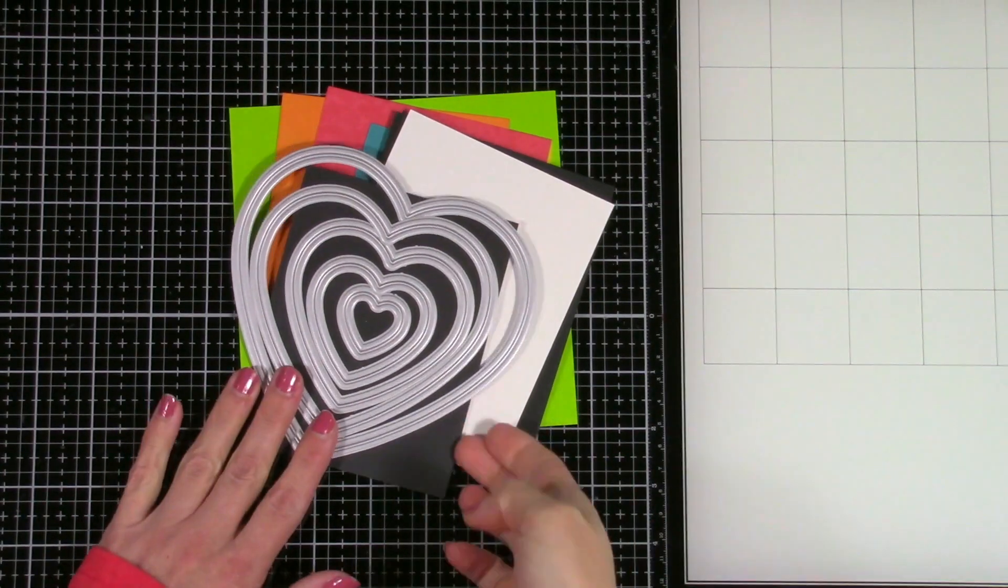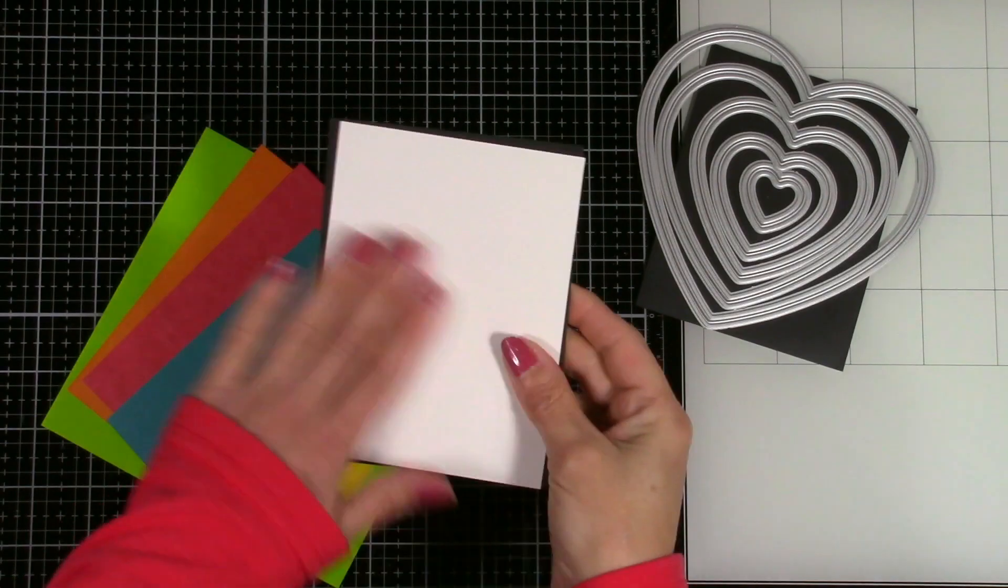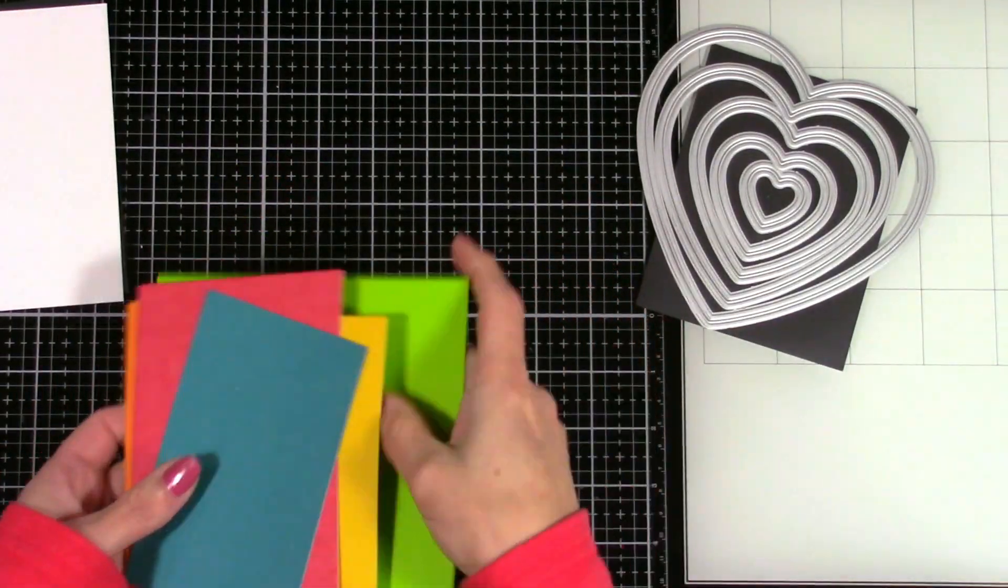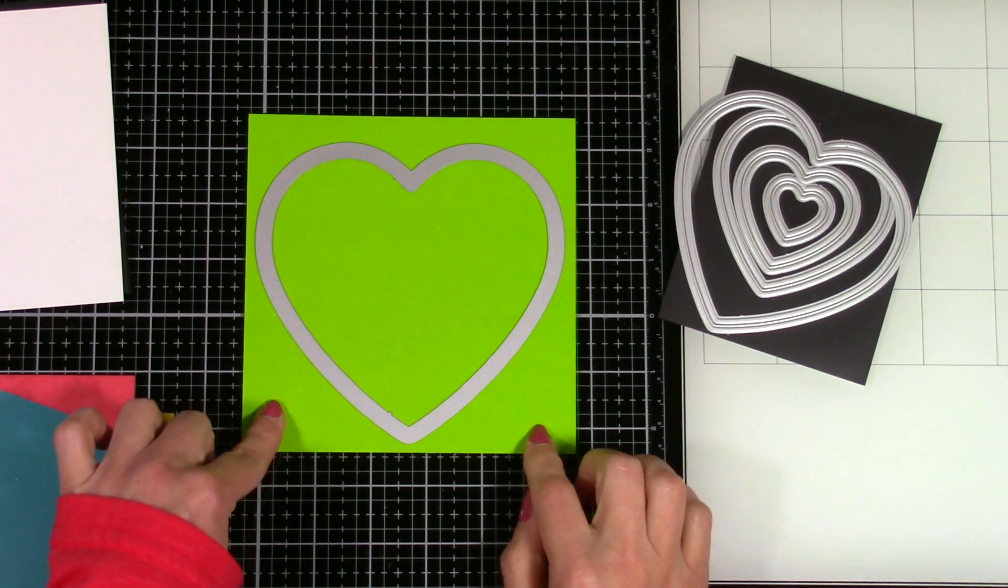We're going to do two cards here and I'm going to start with the double edged embossed heart dies and I'm going to use just a regular A2 size card base. And then I picked out some really bright, pretty colors.